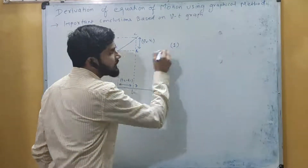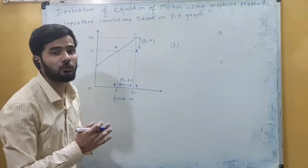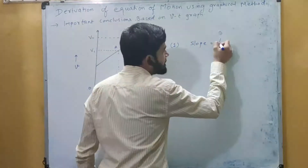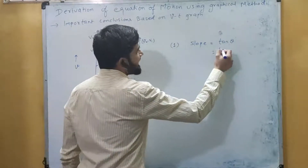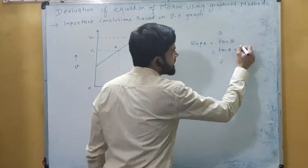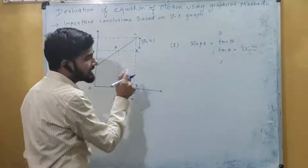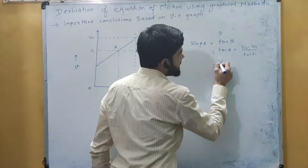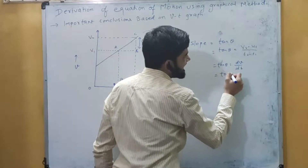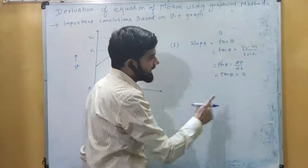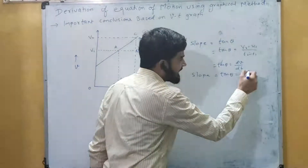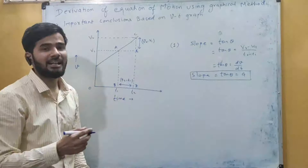The first conclusion we can draw from this graph is that we can directly calculate the acceleration by calculating its slope. The slope is simply tan θ, which equals perpendicular upon base. The perpendicular equals v₂ minus v₁, and the base is t₂ minus t₁. So tan θ equals dv/dt, which means tan θ is directly equal to acceleration 'a', because acceleration equals dv/dt.